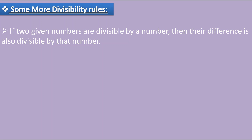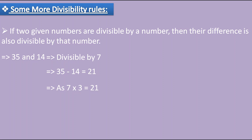Rule 4: if two given numbers are divisible by a number, then their difference is also divisible by that number. Using the same example, 35 and 14 are both divisible by 7. Their difference is 21, and since 7 × 3 = 21, the difference 21 is also divisible by 7. Remember these four rules to solve the next two questions.